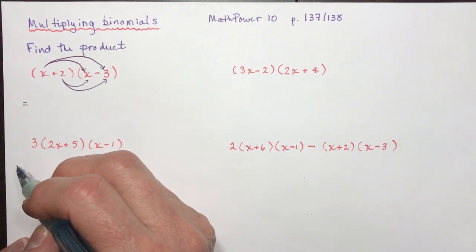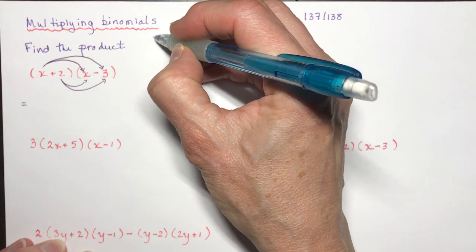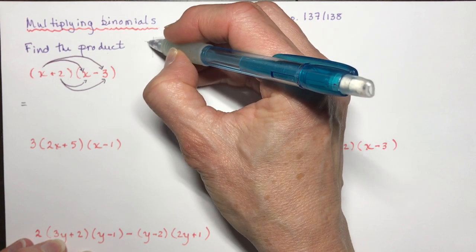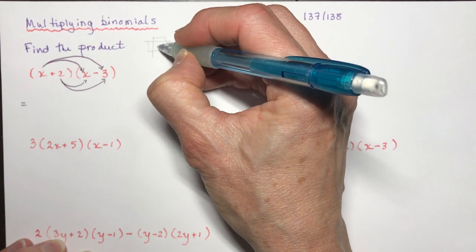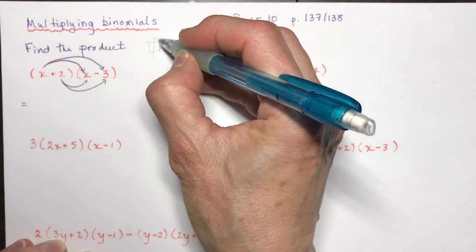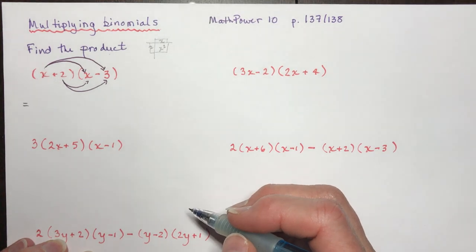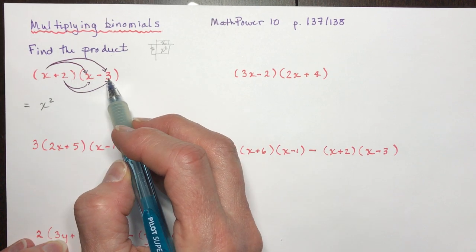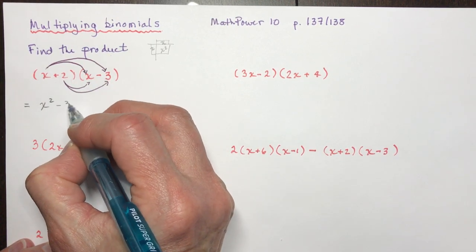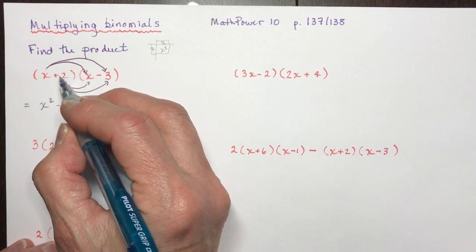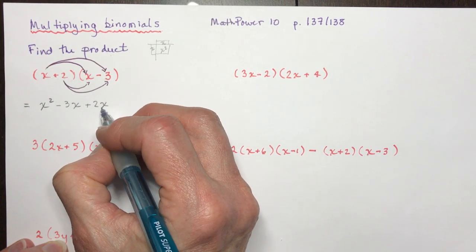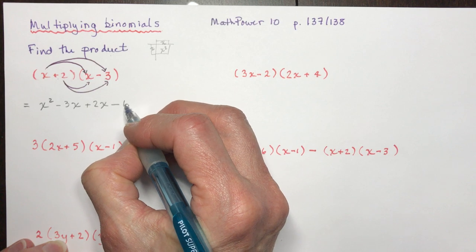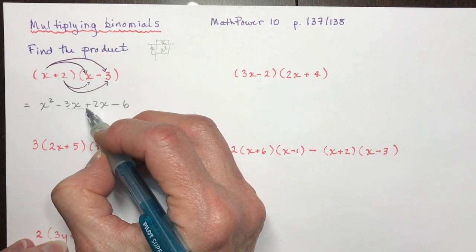So I do x times x. If you worked with algebra tiles, you had a bar here and a bar here, and you ended up with an x squared. So x times x gives x squared. Then I do x times minus three — that's minus 3x. And plus two times x is plus 2x, and two times minus three: positive times negative is negative, so that's minus six.